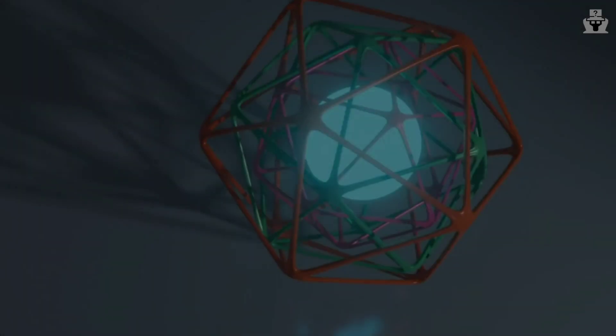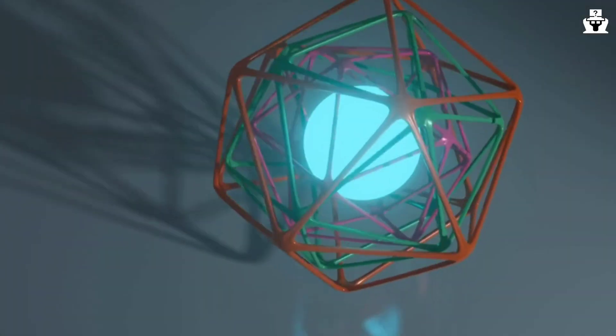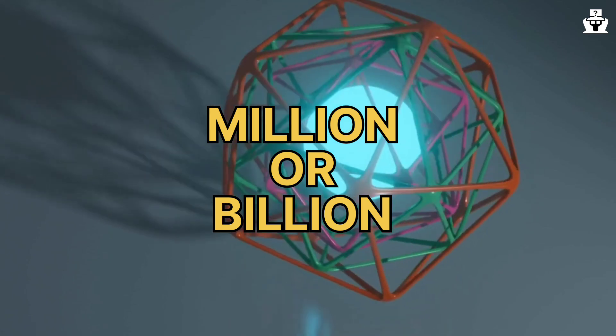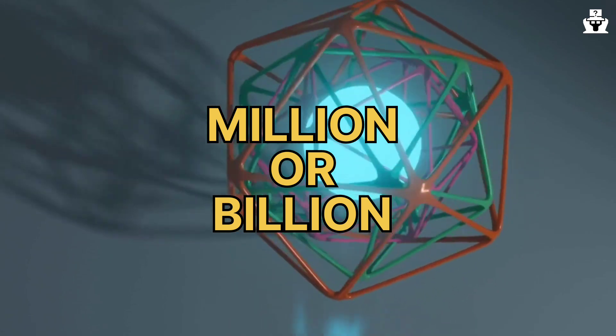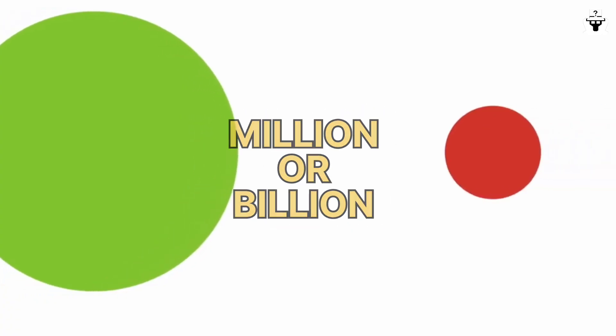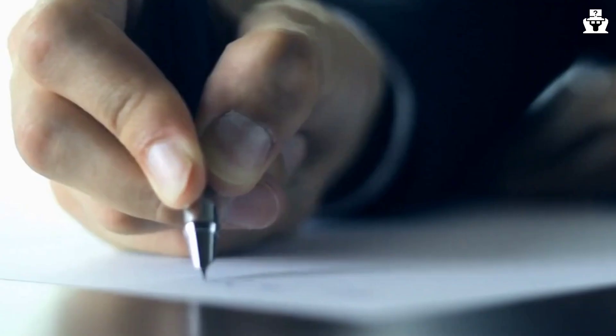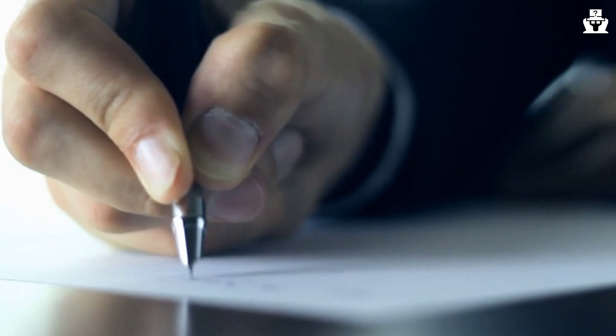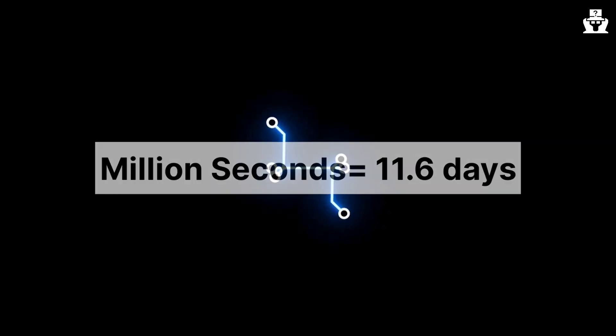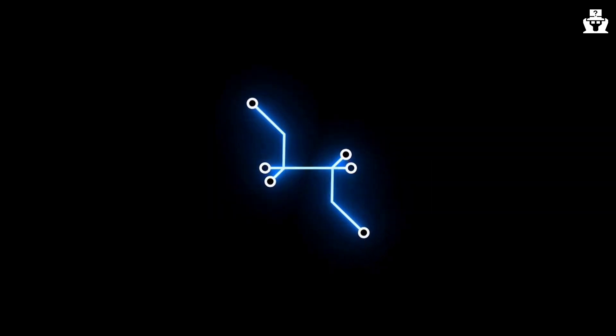What is the difference between million and billion? If you see the words million and billion, just one letter is different for both. But in reality, it is a mind-blowing difference. For example, a million seconds is approximately 11.6 days. It represents a relatively short span of time on the scale of human experience.